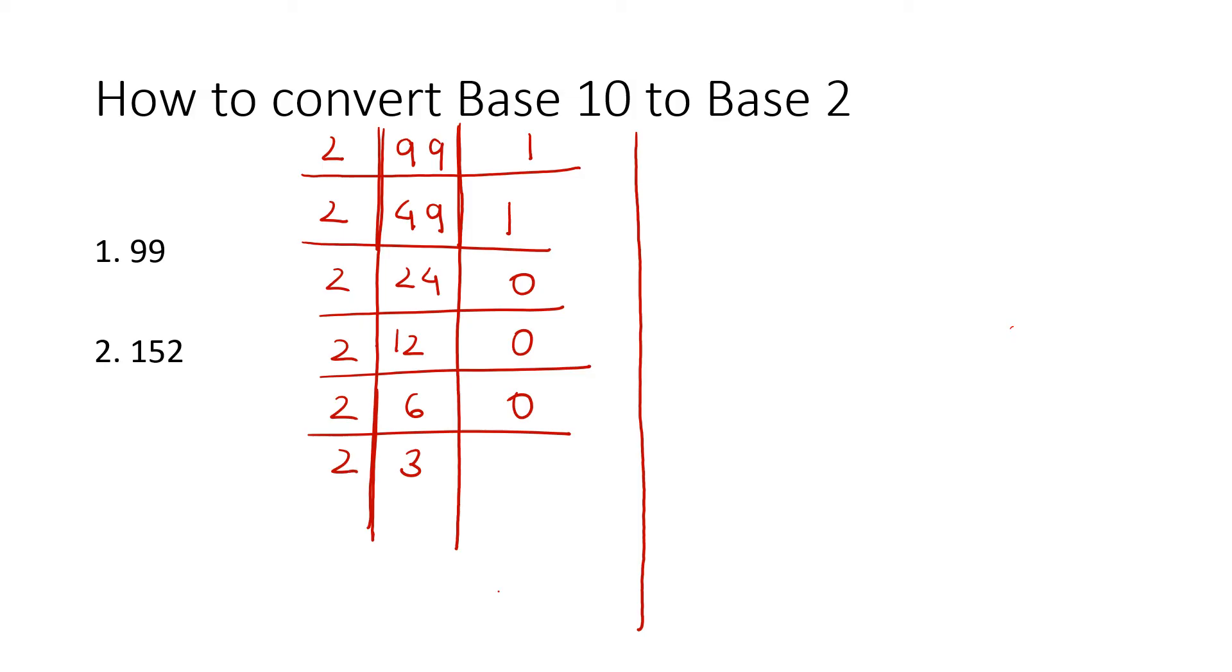Then here, we have 2. And then we have 1 and 1, because 2 times 1 is 2 and our remainder would be 1.